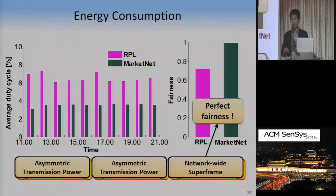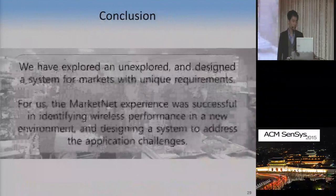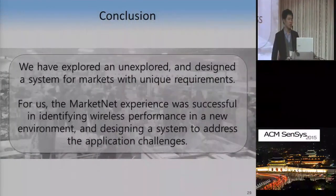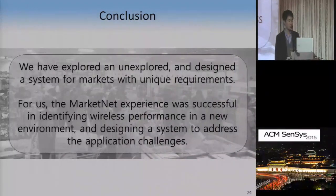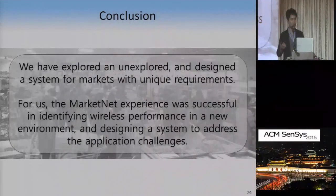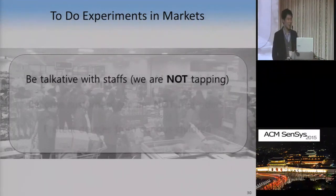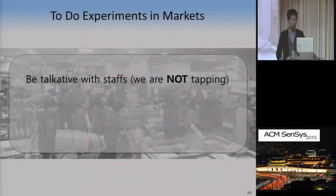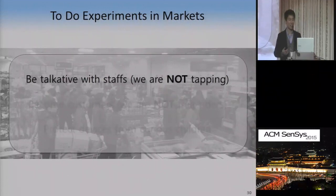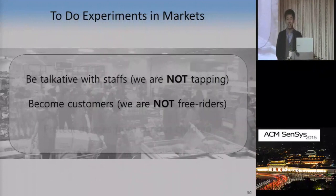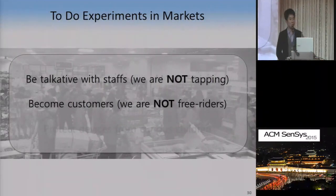I've shown that MarketNet can provide reliable performance in dynamic environments. To conclude, we have explored an unexplored environment and designed a system for markets with unique requirements. The MarketNet experience was successful in identifying wireless performance in a new environment and designing a system to address application challenges. I'll finish after sharing some lessons learned. To do experiments in markets, you need to be very talkative with staff, because they initially think you are tapping and aggressively ask, 'What are you doing here? Why are you tapping here?' — very scary. Second, we need to become sincere customers, continuously buy products and eat food in the targeted markets to let them know we are not free riders.